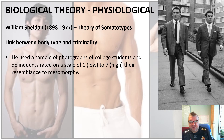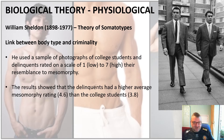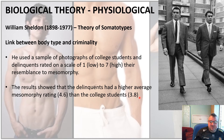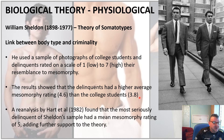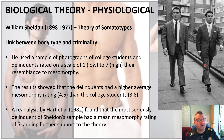He used a sample of photographs of college students and delinquents, rating them on a scale of one for low criminality to seven for high criminality based on their resemblance to mesomorphic body type. Results showed delinquents had a higher mesomorphic rating of 4.6 compared to college students at 3.8. Unlike Lombroso, Sheldon did have a control group and did find a correlation. A reanalysis by Hart et al. in 1982 also found that the most seriously delinquent of Sheldon's sample had a mean mesomorphic rating of 5, adding further support. The Kray twins — violent gangsters — are another example conforming to the mesomorphic trait.